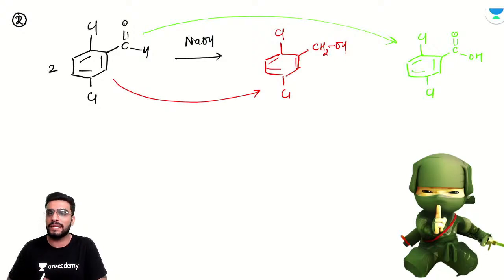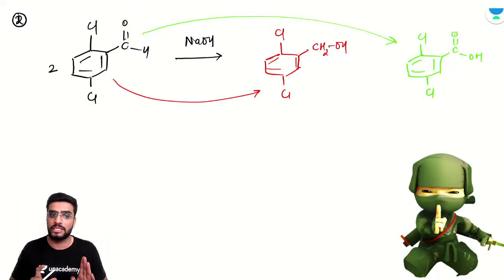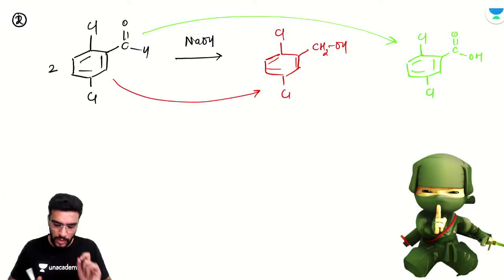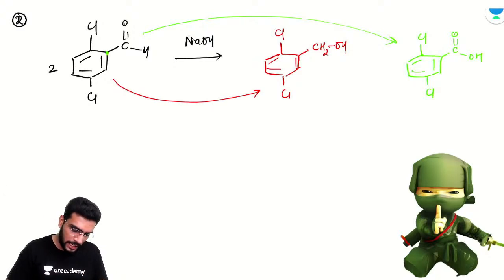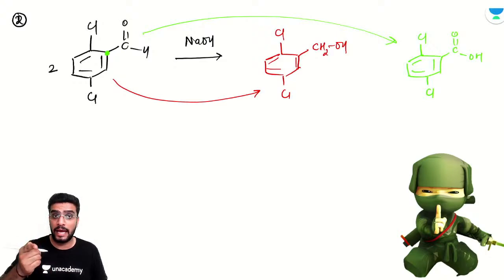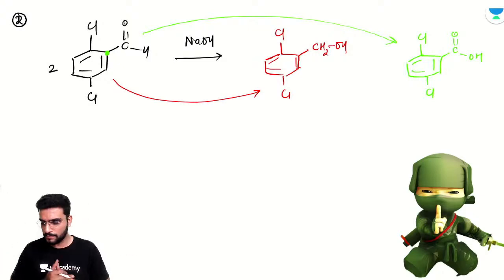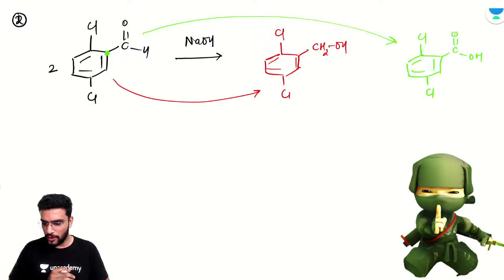Basically: mechanism understand karne ke liye thi, lekin exam mein 'button-light on' approach use karo. Button kya hai? Alpha carbon dekha, alpha hydrogen nahi hai, aldehyde confirm, alkali confirm — ek reduction, ek oxidation. Application complete. Yeh baat yaad rakhni hai. Aage badhte hain — ek aur example dekhna hai.